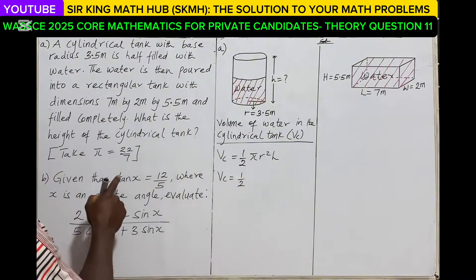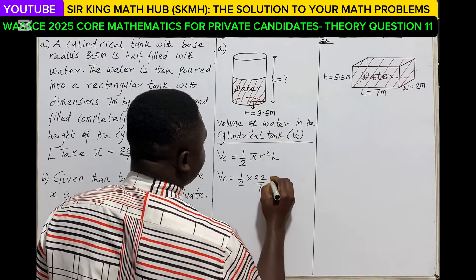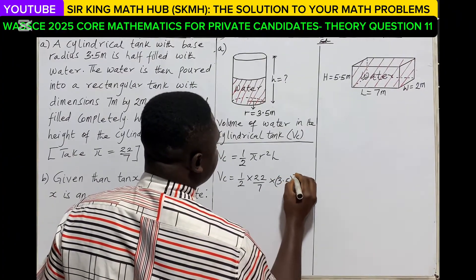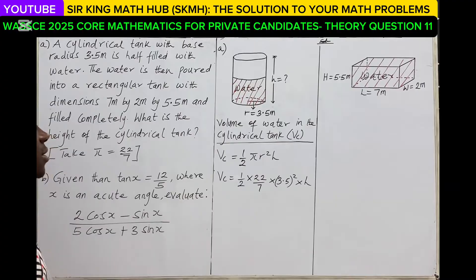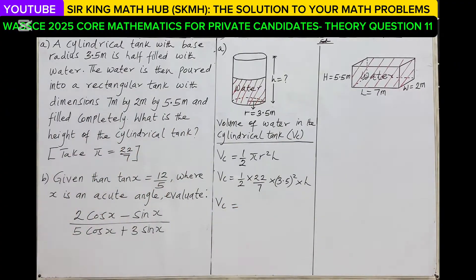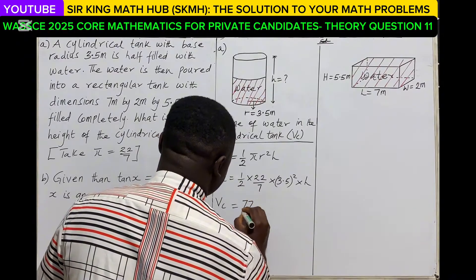We are asked to take π as 22/7. The base radius is 3.5 meters. Doing the substitution: (1/2) × (22/7) × (3.5)² × h. Using our calculator, the volume of water in the cylindrical tank simplifies to 77/4 × h.